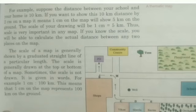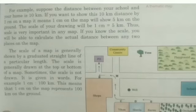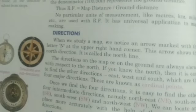Once we find the four cardinal directions, it is easy to find the other four intermediate directions: north-east, south-east, south-west, and north-west. We can locate any place more accurately with the help of these intermediate directions. We can find our direction by facing the rising sun, with the help of the pole star, or with the help of a compass.